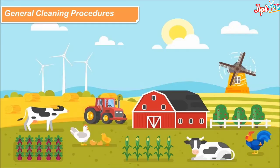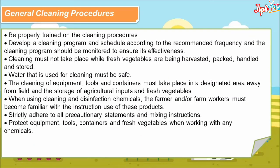For general cleaning procedures, be properly trained on the cleaning procedures. Develop a cleaning program and schedule according to recommended frequency, and the cleaning program should be monitored to ensure its effectiveness. Cleaning must not take place while fresh vegetables are being harvested, packed, handled, and stored. Water used for cleaning must be safe. The cleaning of equipment, tools, and containers must take place in a designated area away from field storage of agricultural inputs and fresh vegetables. When using cleaning and disinfection chemicals, the farmer and farm workers must become familiar with the instructions for use of these products and strictly adhere to all precautionary statements and mixing instructions. Protect equipment, tools, containers, and fresh vegetables when working with any chemicals.